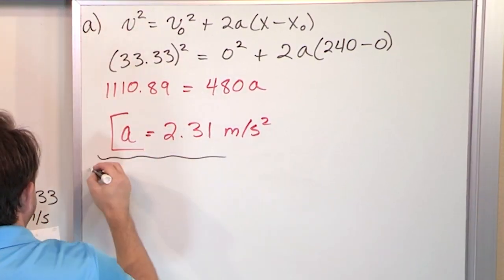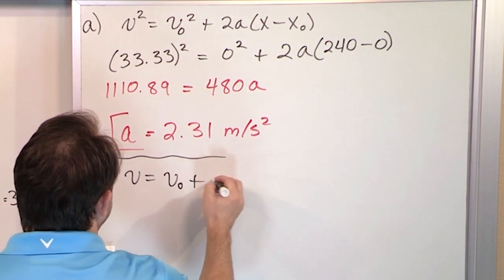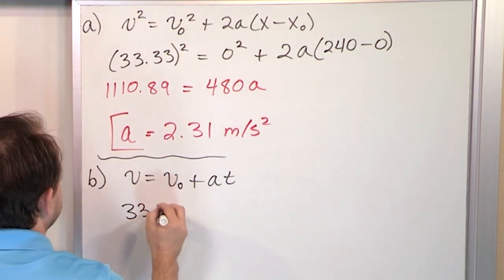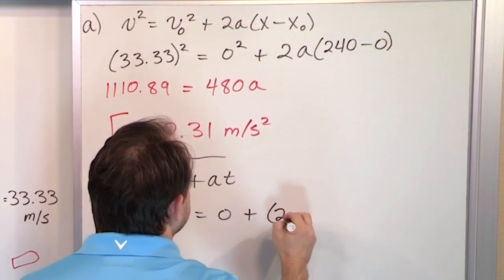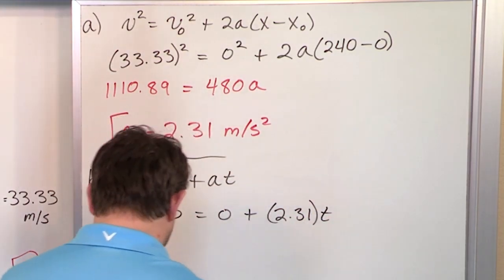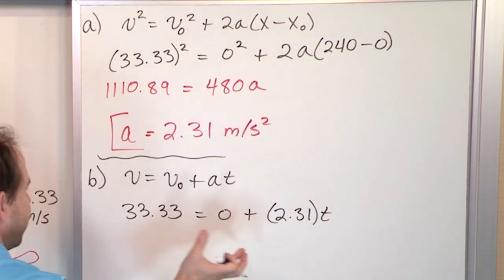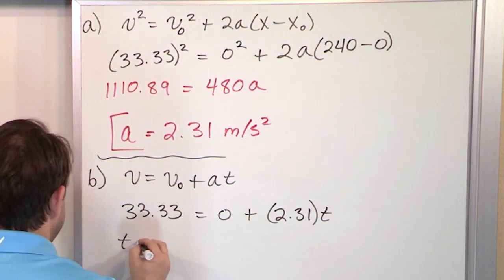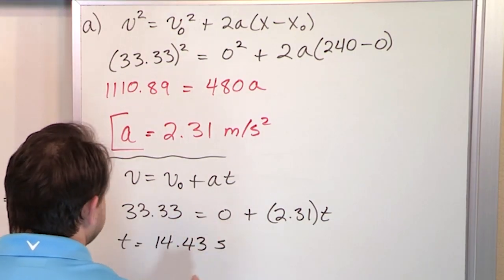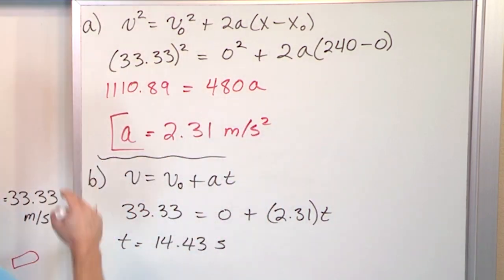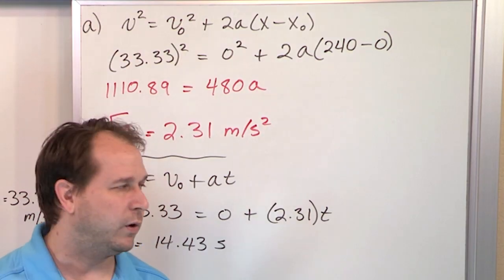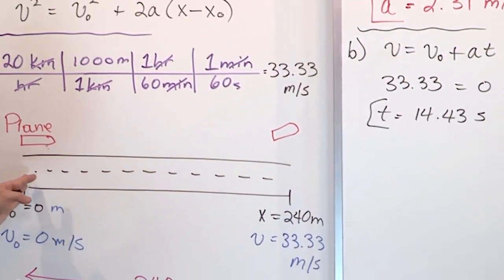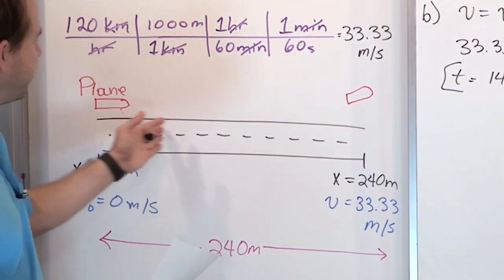For Part B, using v equals v-naught plus at: the final velocity is 33.33, the initial velocity is zero, the acceleration is 2.31 meters per second squared, and I solve for t. The zero term drops out, so I just divide 33.33 by 2.31. Time equals 14.43 seconds. You know it's seconds because the acceleration was in meters per second squared and the velocity was in meters per second, so time must be in seconds. That's how long the takeoff roll takes.